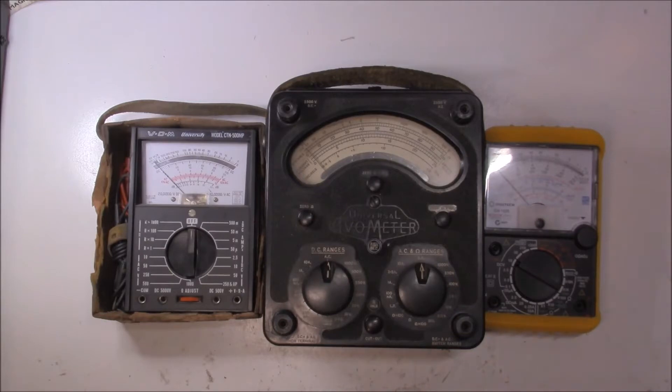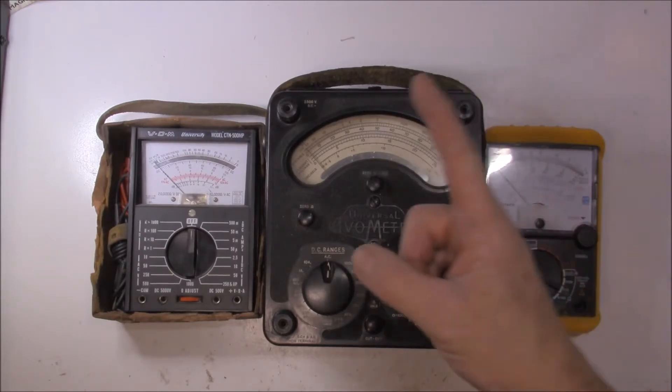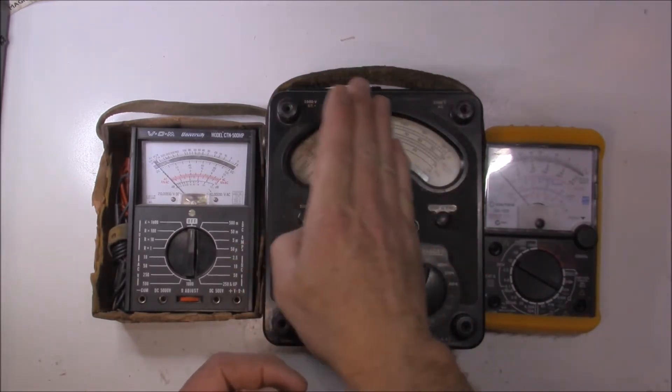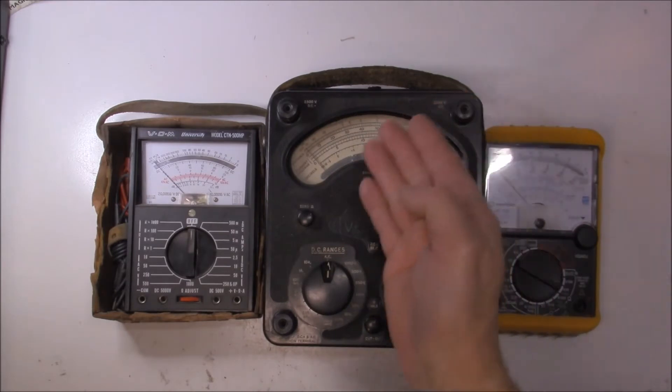One problem associated with analog meters is the parallax error. This is where you look at a needle and if you don't look at it face on, you can actually get the incorrect reading, this way or this way. Take an example, you're cruising down the road and you look over at the person driving and it appears that they're doing 110 kilometers an hour in a 100K zone. Well, the way they look at it, it's exactly on 100Ks, but due to parallax error, you're seeing 110Ks.